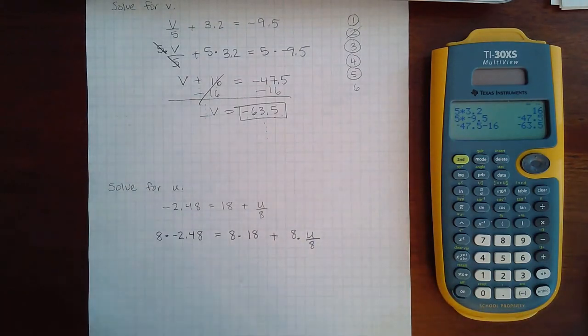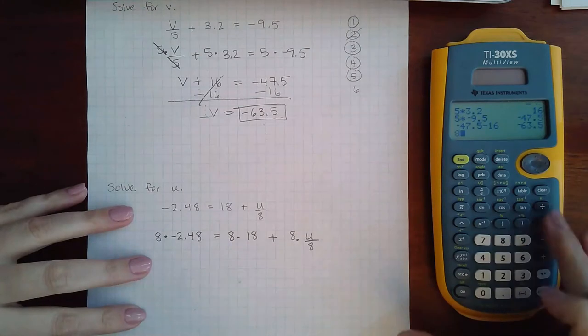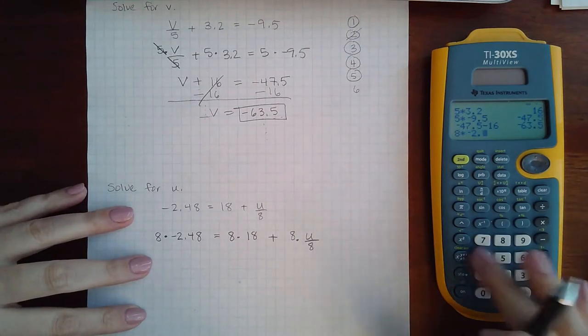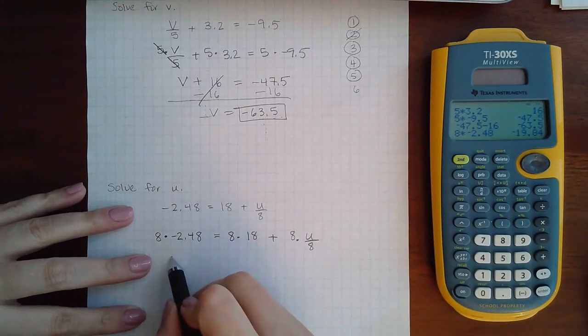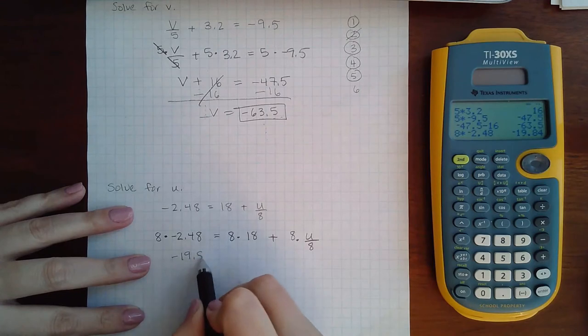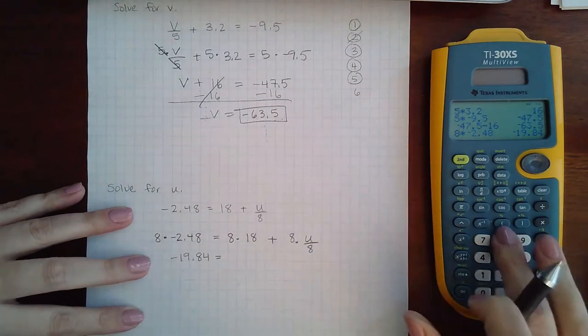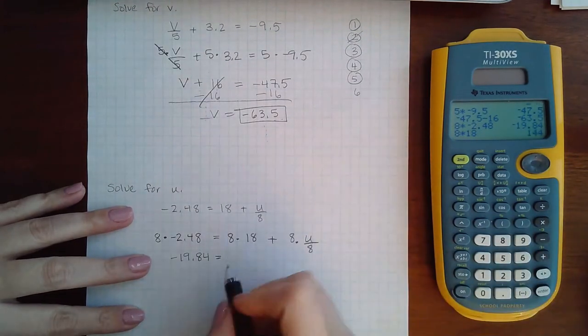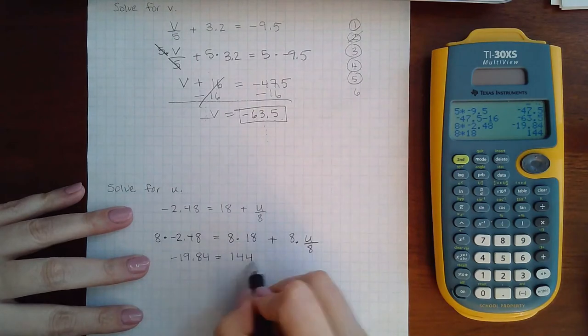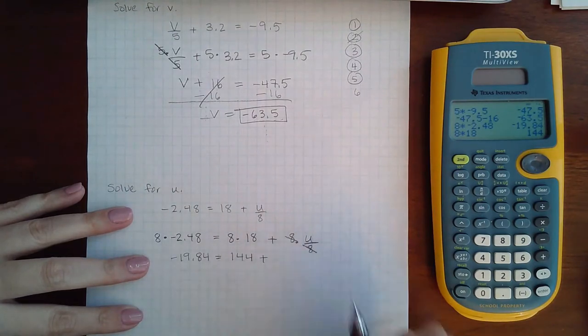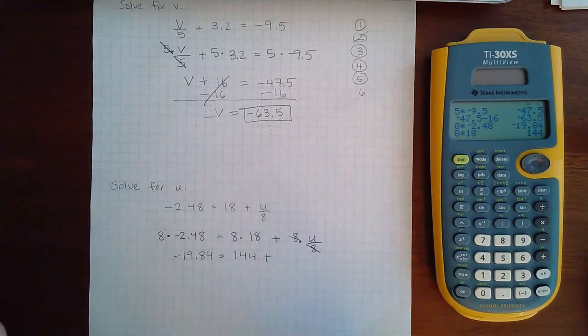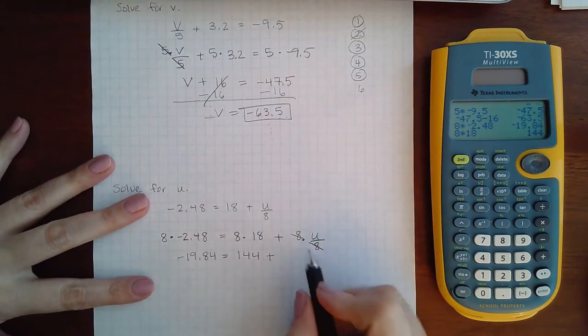So eight times negative 2.48 is negative 19.84, eight times 18 is 144, and here this eliminates the fraction which is the purpose of multiplying by that common denominator.